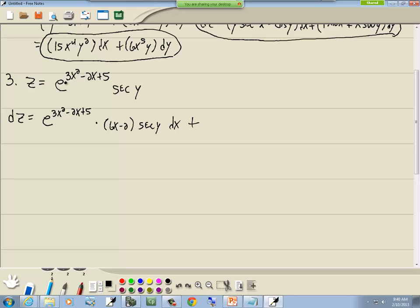Plus, then we'll take the partial with respect to y. This e to the 3x squared minus 2x plus 5 just remains, that's like a constant now, that's how we're treating it. And the derivative of secant is secant tangent, so this becomes secant y tangent y dy.